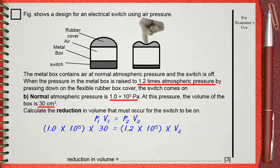Simply the calculations show that V2 is 25 centimeters cube. But wait, the question is not answered yet, because he's not asking for the new volume, he's asking for the reduction in volume.